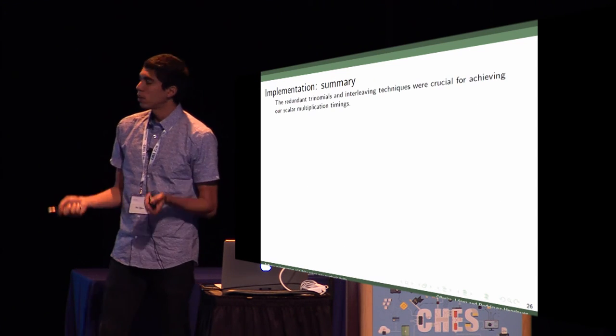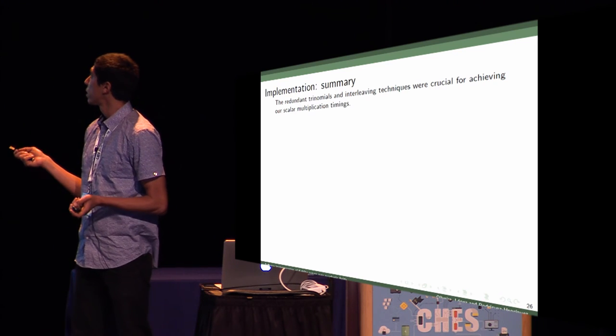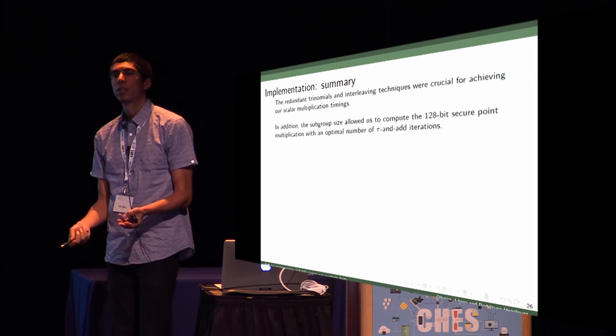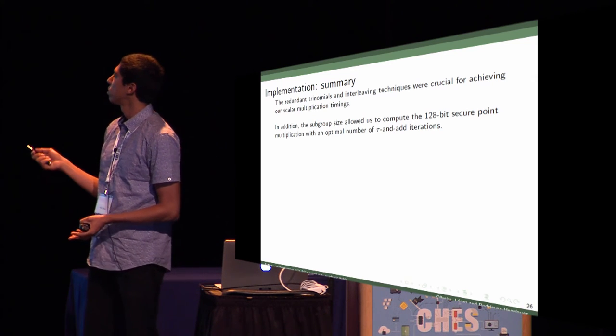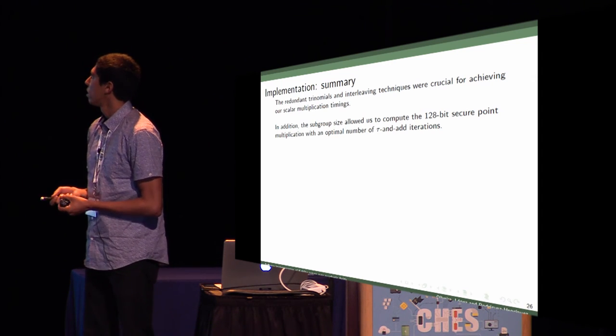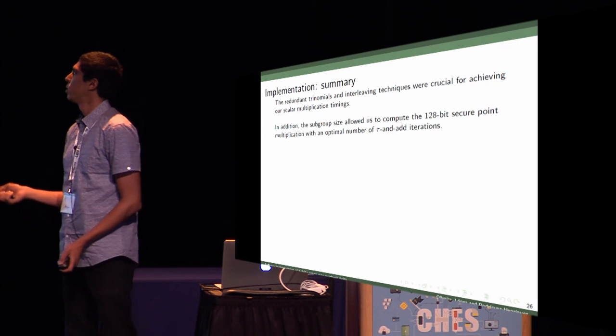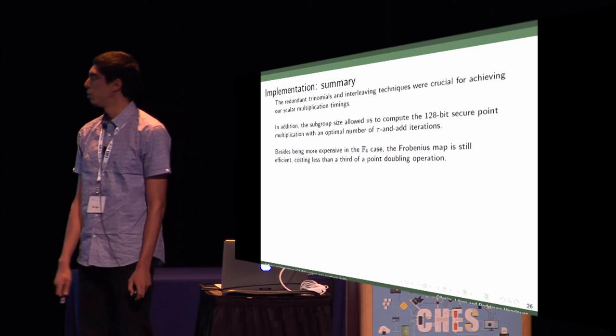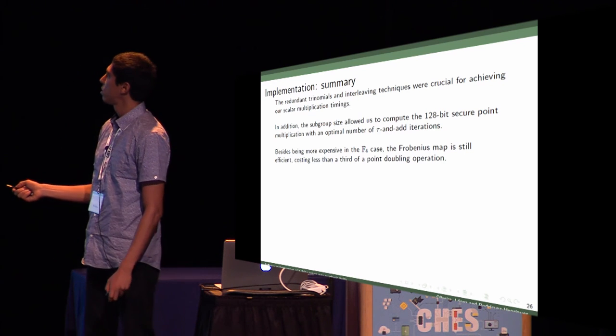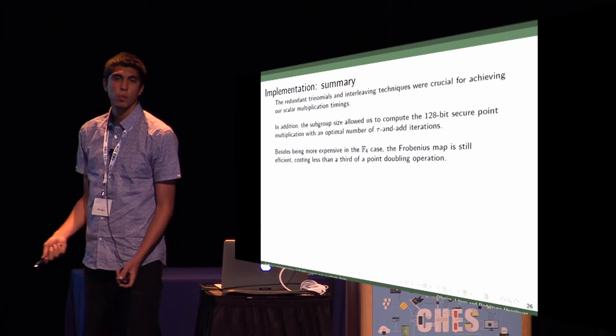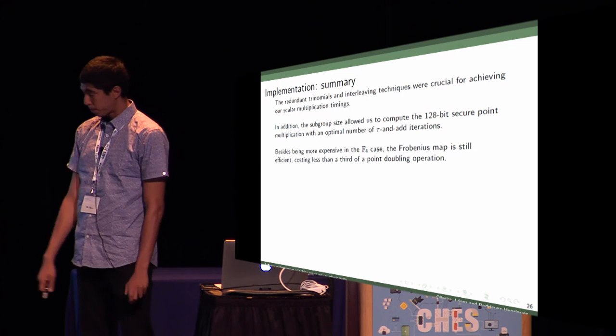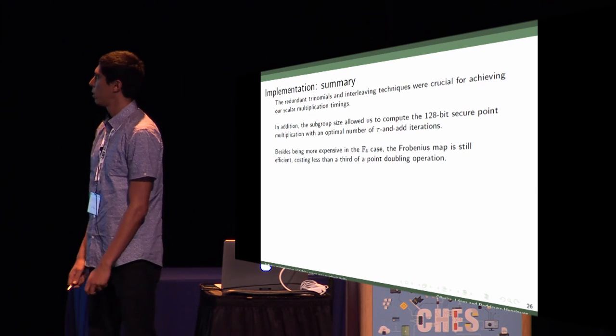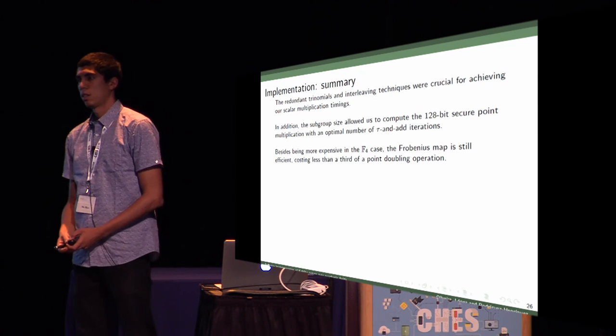These two strategies were crucial for achieving our scalar multiplication timings, and we have a nice subgroup size, which allows computing 128-bit security for an optimal number of iterations compared to Koblitz curves in F2. The Frobenius, besides being more expensive, is still efficient, costing less than a third of point doubling, so you can still substitute point doubling by tau in this case.